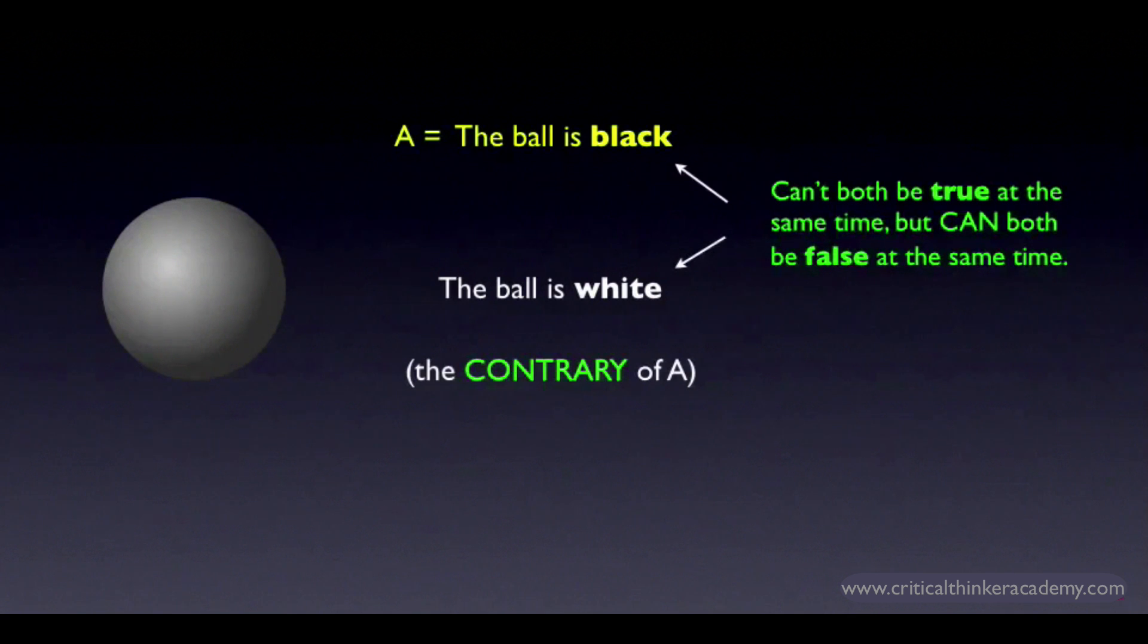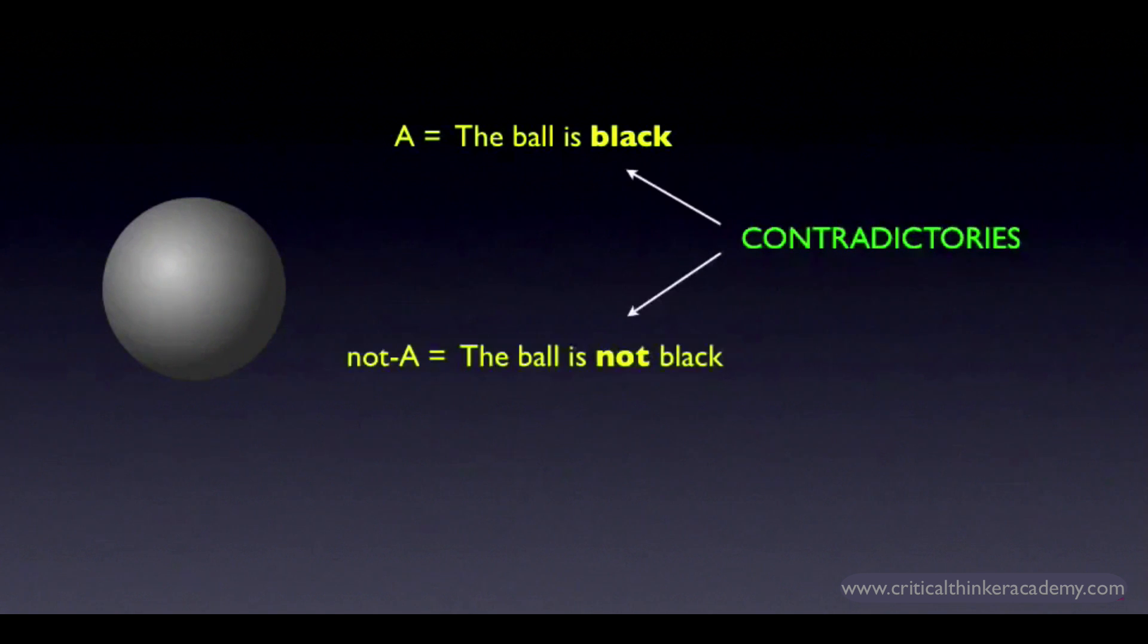Now how do we formulate the contradictory of the ball is black so that it always has the opposite truth value? Like so. You say the ball is not black. Now the ball being gray doesn't violate the definition of a contradictory. In this world A is false but not A is true. It's true that the ball is not black.